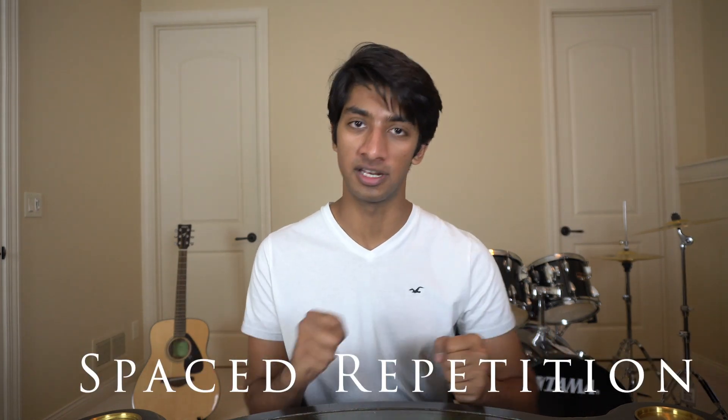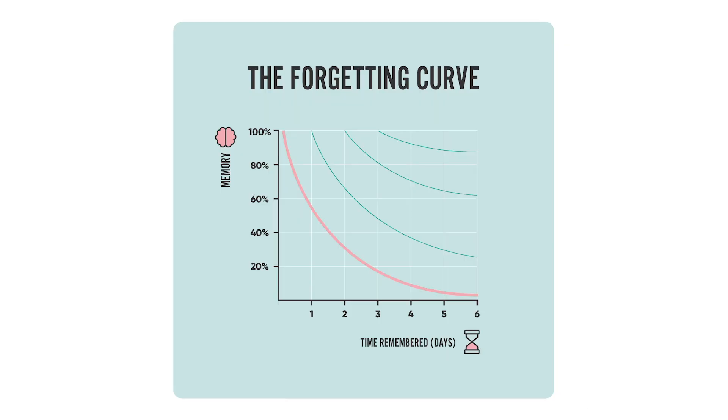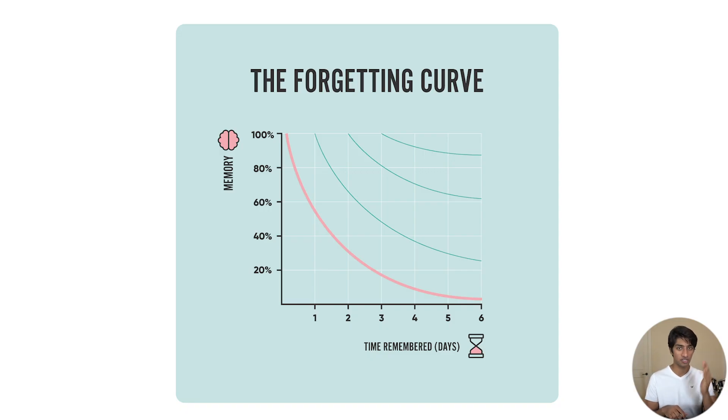Principle two: spaced repetition. You need to do this multiple times over a long period of time for any of this to work. There's a phenomenon called the forgetting curve, originally discovered in the 1800s by Herman Ebbinghaus. Time is on the x-axis and your retention is on the y. Your knowledge, regardless of who you are, how smart you are, where you come from, will decay exponentially with time unless you make the effort to go back and revise the content at regular intervals. What we can do to help this is interrupt this forgetting curve — with each repetition, each practice session, you end up with more overall knowledge, and your memory tends to decay at a much slower rate.